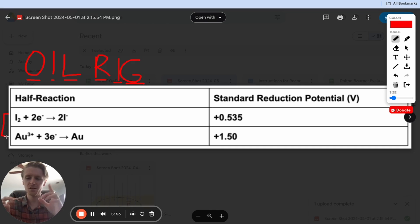But in order to do this, we need to figure out which one is going to be losing electrons and which one is going to be gaining electrons. A good way to figure this out is that the one with the higher standard reduction potential is always going to be reduced, which makes sense, right? It's reduction potential, and so it has more potential to be reduced.